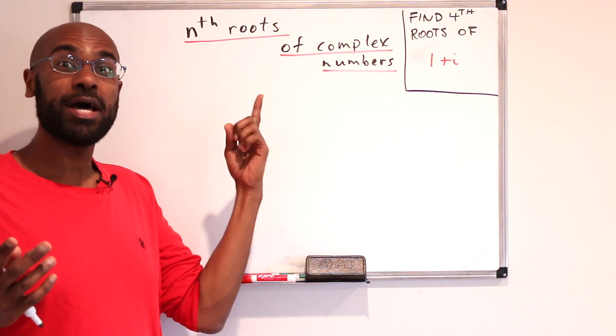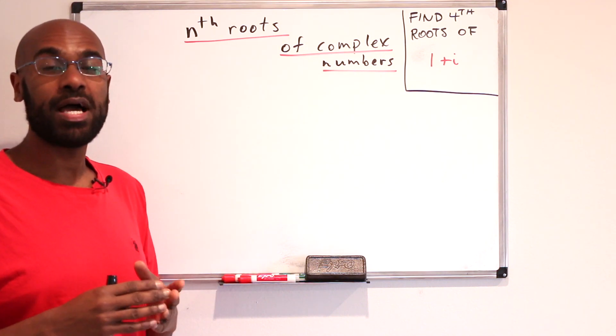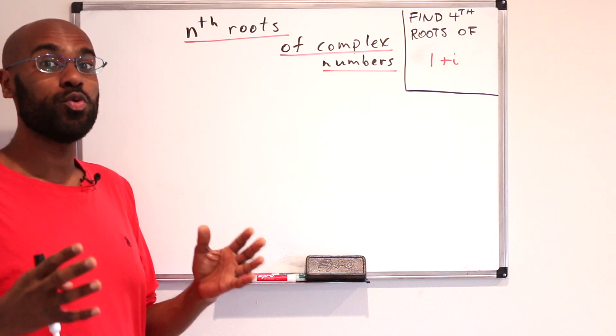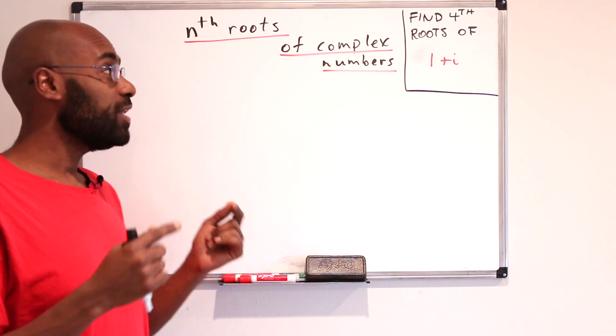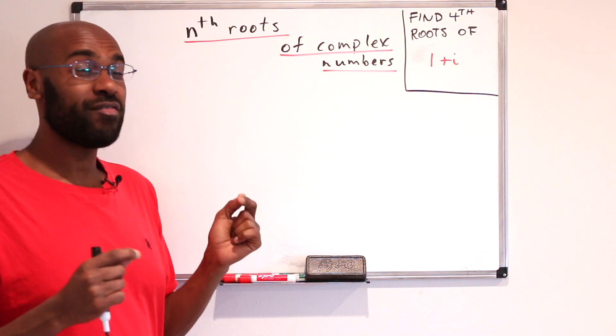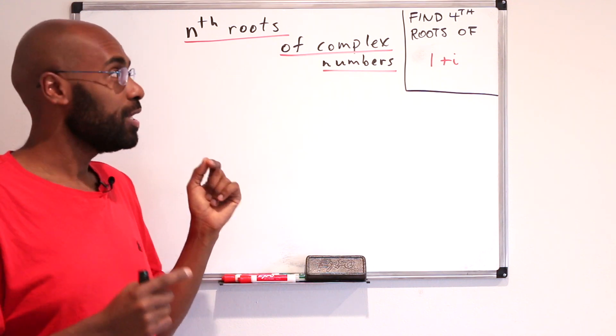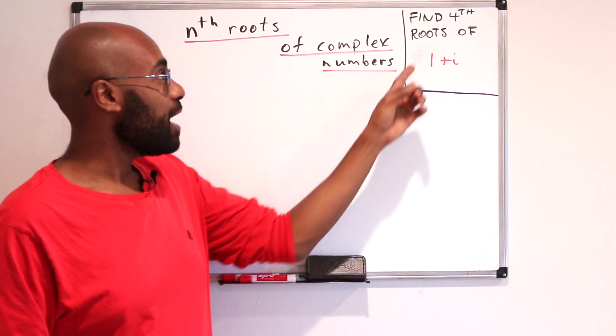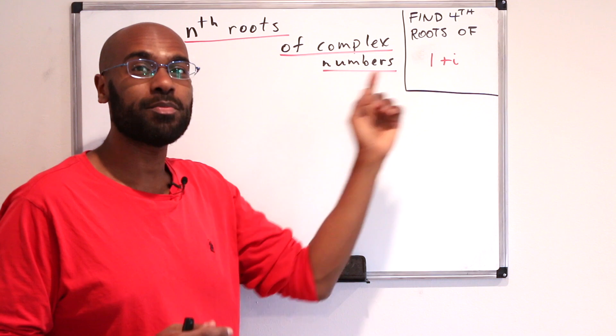In a previous video featuring black pen and red pen, we talked about how to find an explicit formula for the square roots of a complex number. In this video, we're going to talk about how to find nth roots in general, and in particular we'll see the example of finding 4th roots of the complex number 1 plus i.